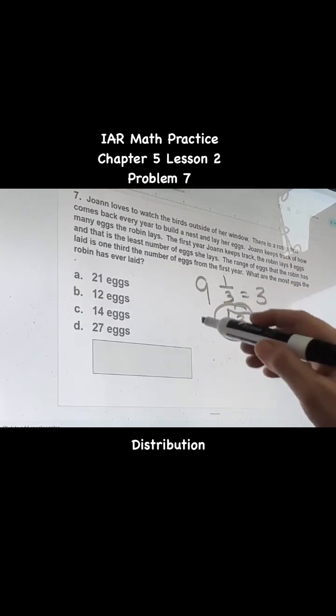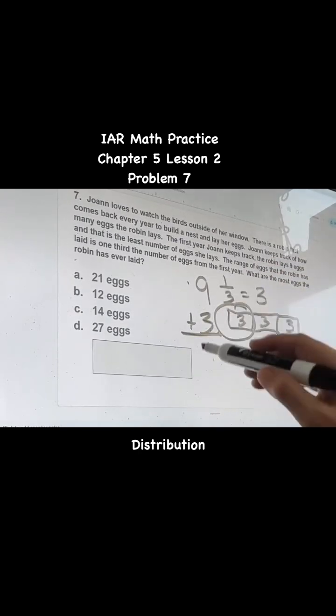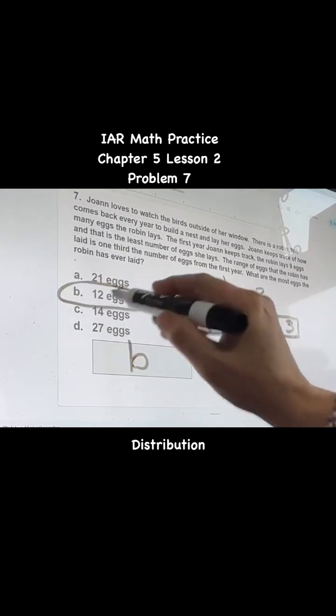So three plus nine, that's the smallest number, and this is the range, equals 12. So your answer should be B, 12 eggs.